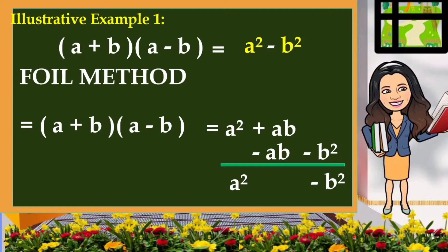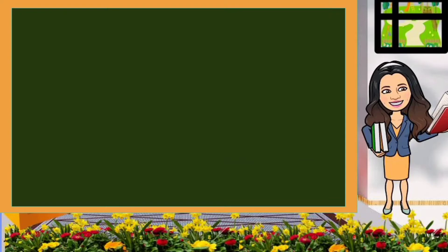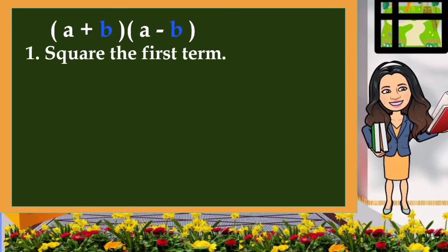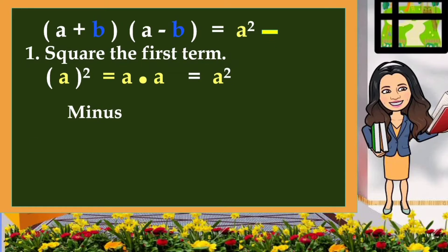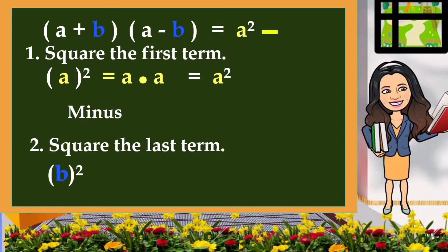It consists of two terms. Here's another way of finding the product of the sum and difference of two terms. Since they have the same variable for the first term and the same variable also on the last term, our first step is we square the first term. Our first term is A and when we square it, the result is A squared. Then write minus and then square the last term. Since we have the same variable for the last term, which is B, B times B is equivalent to B squared. So, whether you use the FOIL method or this process, we will arrive at the result A squared minus B squared.